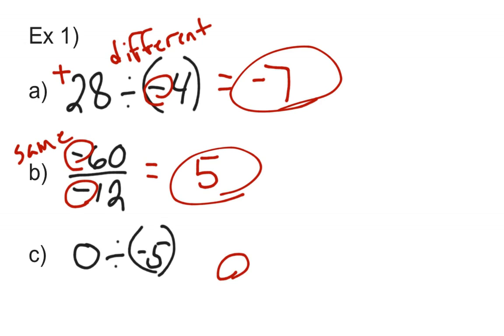And then part C, 0 divided by negative 5. Well, anything divided by 0 is 0. So, I get a 0 for an answer. Hopefully you guys got A, B, and C correct.